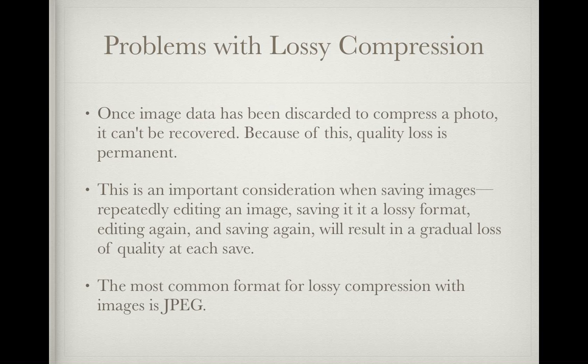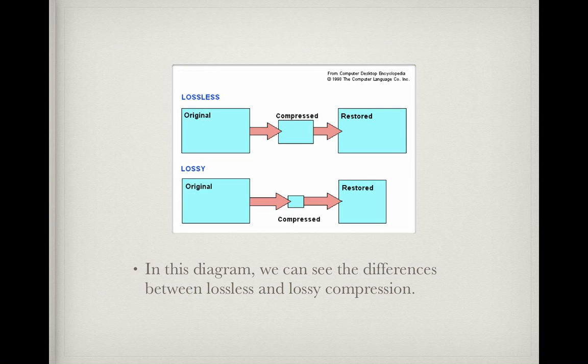The most common format for lossy compression with images is JPEG. In this diagram, we can see the differences between lossless and lossy compression. In lossless compression, the original is compressed and then restored to exactly the same image. In lossy compression, the original is compressed and restored to an image that is not as high in quality, but most of the time, if done correctly, the person who sees the photo will not notice.